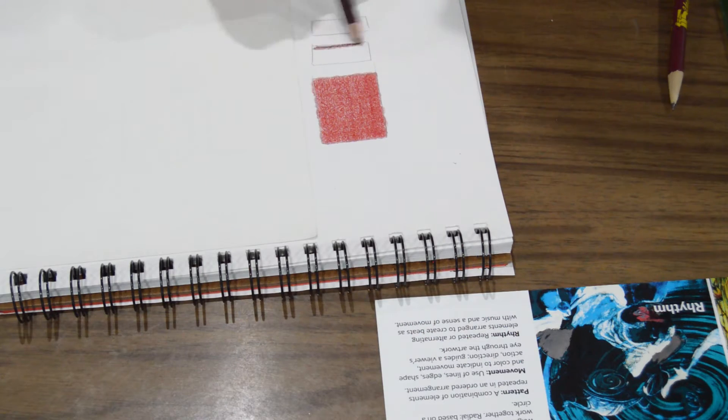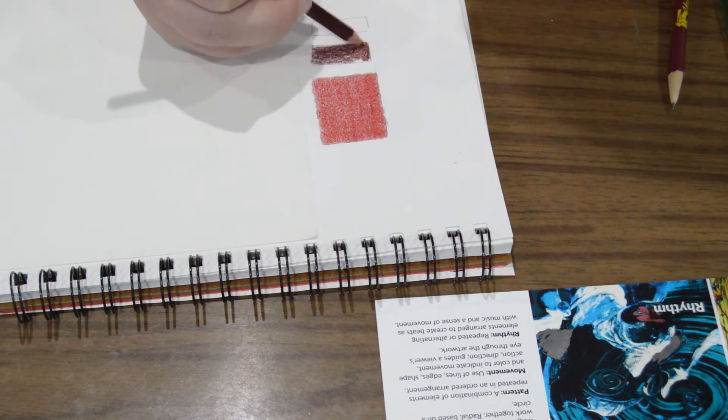When using colored pencils, directional lines and scribbles won't give a uniform layer of color.